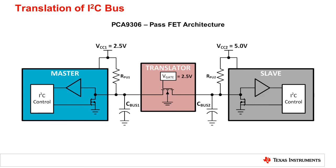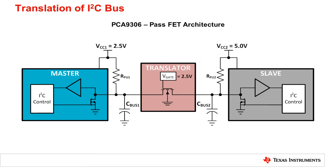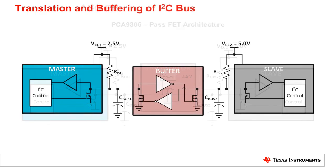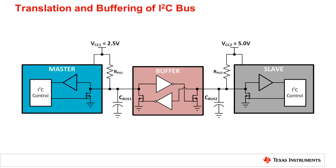Usually, adjusting the pull-up resistances to each bus will most times solve the problem seen on the bus. Translators are a cost-effective way to perform translation and are used as long as bus capacitances don't violate the I2C standard based on the mode of operation used. This interdependence between pull-up resistance and bus capacitance can often be avoided by using a buffer, which separates the bus capacitance and associated pull-up resistances on each side. For more information about I2C buffers, please watch the I2C buffer overview video or read the 'Why, When, and How to Use I2C Buffers' application report.